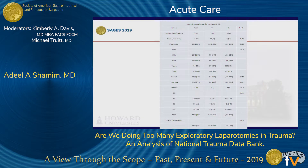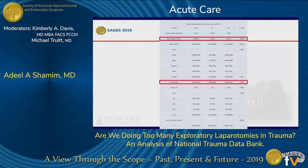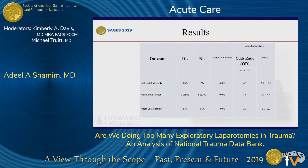Looking at baseline characteristics, the mean age was different between groups, with slightly older patients in the NL group. The rate of penetrating injury was slightly higher in the DL group, and lower GCS was seen in the NL group. These differences were statistically significant.